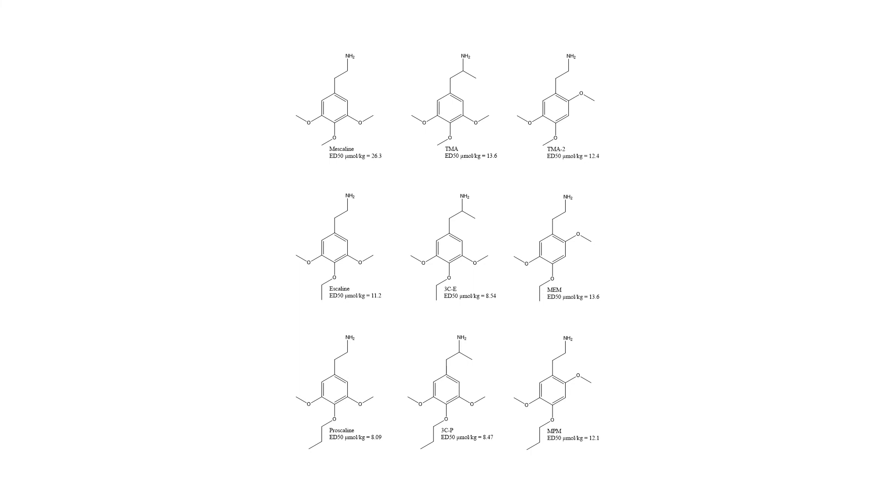Let's look at the ED50 values of mescaline and its analogs to develop some general trends in terms of structure-activity relationship. Mescaline has an ED50 value of 26.3 micromoles per kilogram, whereas TMA has an ED50 value of 13.6 micromoles per kilogram. Because TMA's 13.6 is about half that of mescaline's 26.3, we can say that TMA is about two times more potent than mescaline as a drug. Structurally, all we've done going from mescaline to TMA is putting a methyl group one carbon away from the amine. Thus, from a structural activity relationship, we can make the following statement: methyl addition to one carbon away from the amine increases the potency.